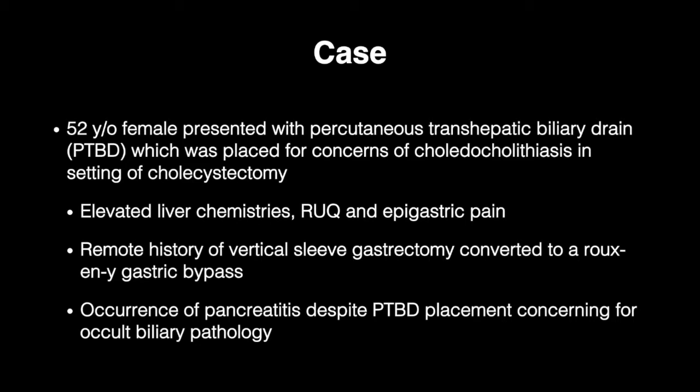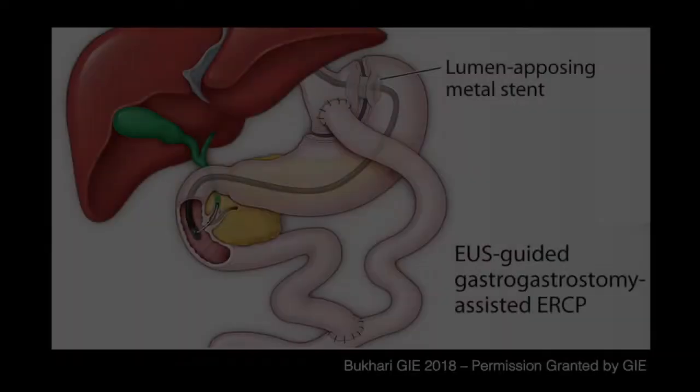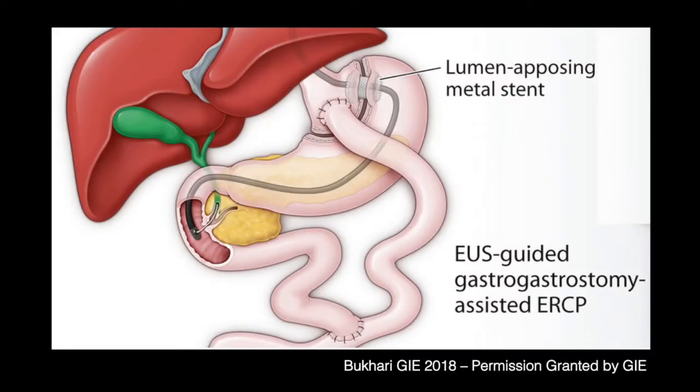After discussion with the patient and members of the care team, it was determined that further endoscopic therapy was needed. We initially planned to perform EUS-directed transgastric ERCP, or EDGE. However, due to prior sleeve gastrectomy with conversion to Roux-en-Y gastric bypass, there was insufficient target for transluminal access and the procedure was aborted.